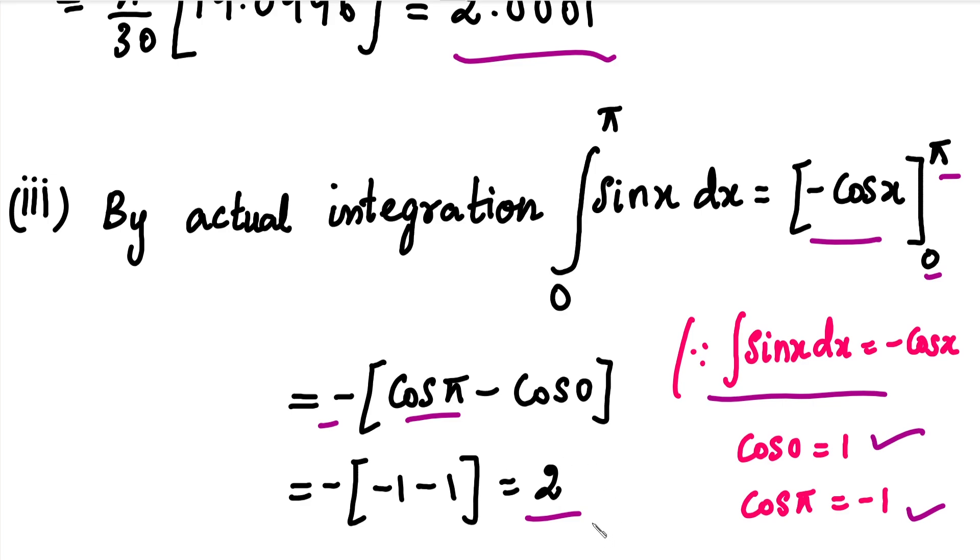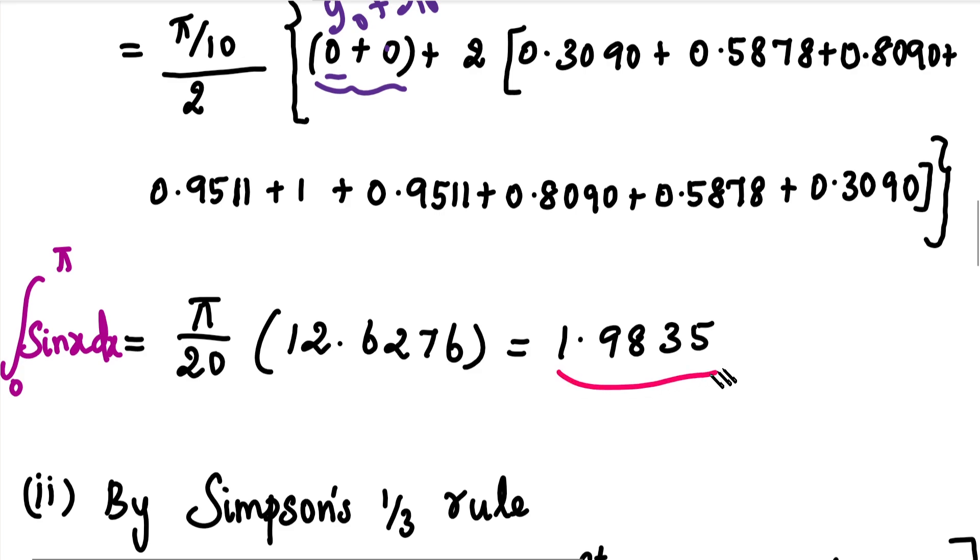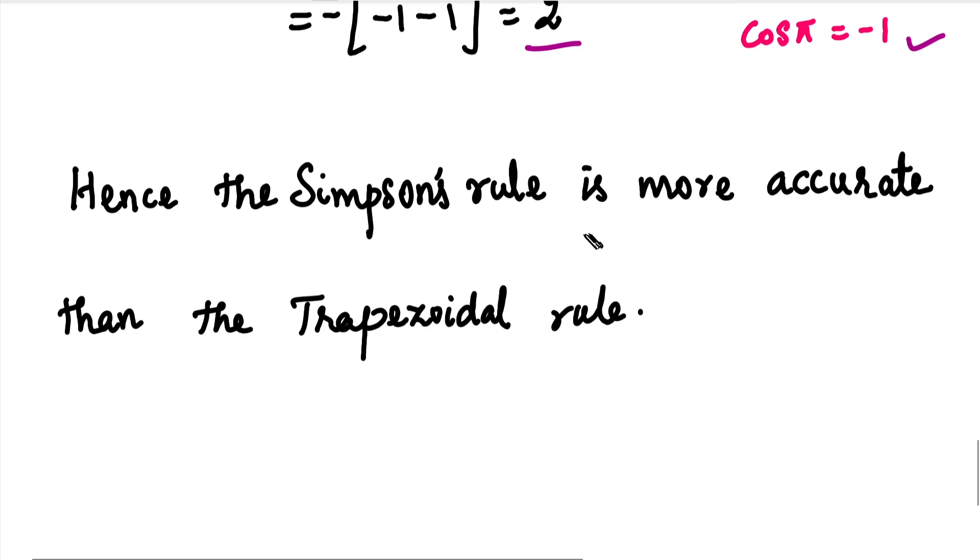Comparing the actual integration value with trapezoidal and Simpson's rules: the Simpson's rule value is 2.0001 and the actual value is 2, so they're very close. But the trapezoidal rule gives 1.9835, which differs from the actual value of 2. The conclusion is that Simpson's rule is more accurate than trapezoidal rule.